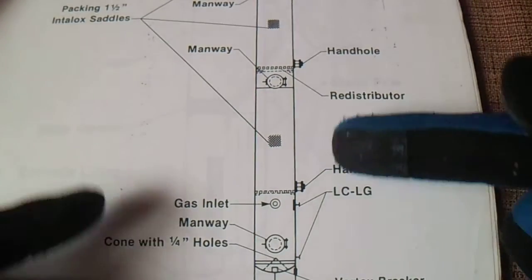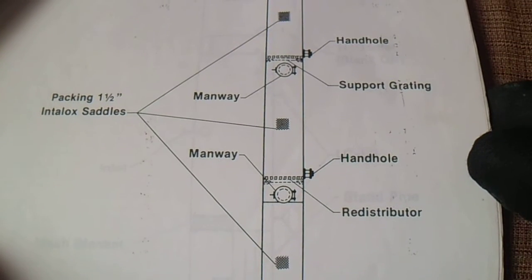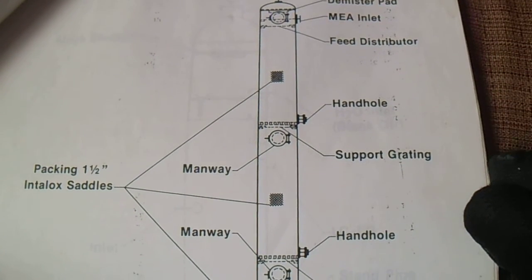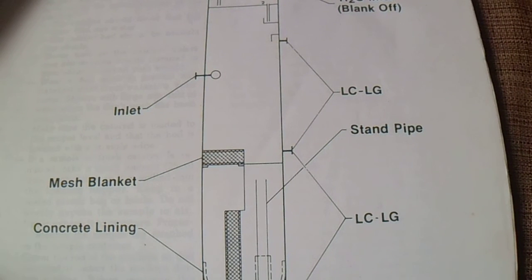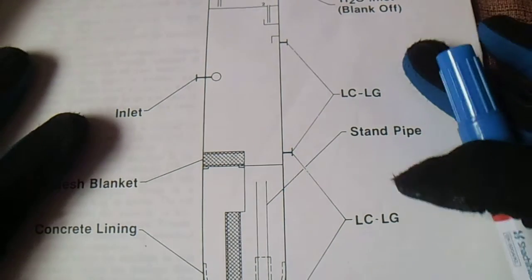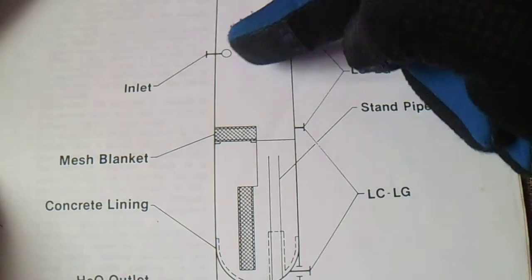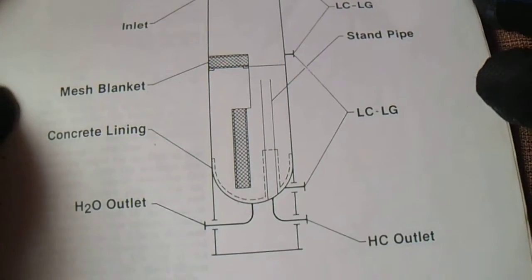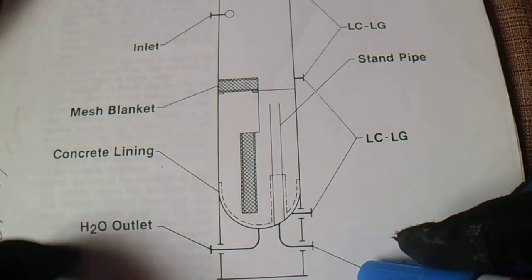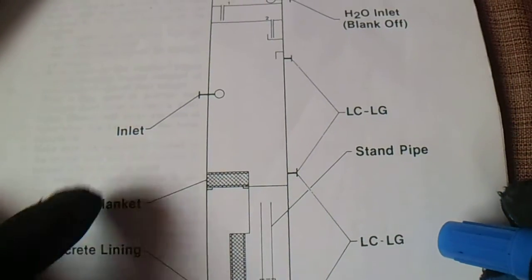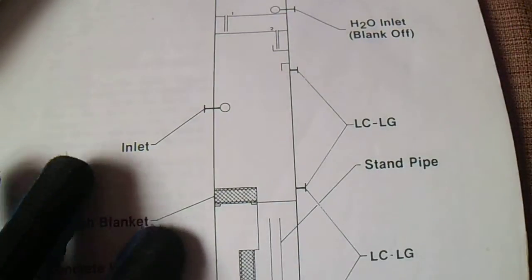The H2 plant absorber has different levels and names on each level. Next is the high pressure separator. From each nozzle they have a different name. From the bottom we have HC outlet, H2O outlet — H2O is water — and we have concrete lining, an inlet nozzle, H2O inlet, blank flange, a manway from the top, and gas outlet.